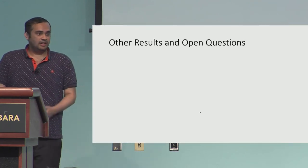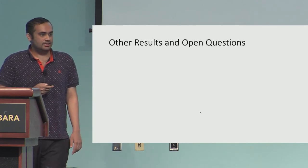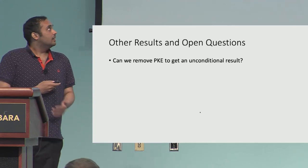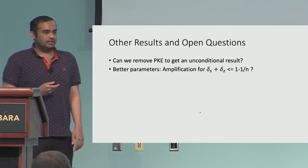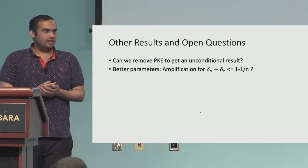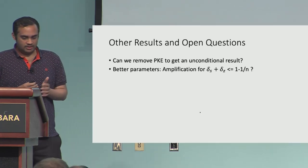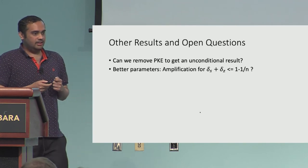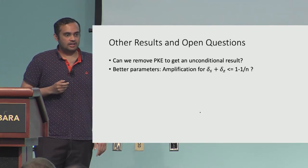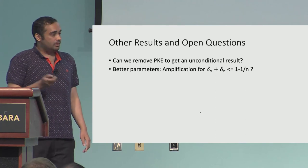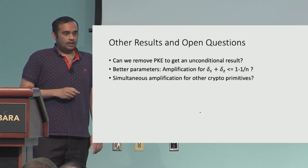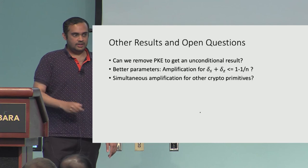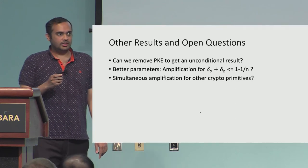Let me conclude with some open questions. First, can we get rid of public key encryption to get an unconditional result? Second, can we construct this amplification with better parameters? Our compiler is not very efficient, and we can only handle when δS plus δZ is 1 minus some constant — can we go all the way to 1 minus 1/security parameter? Finally, can we study simultaneous amplification for other cryptographic primitives? With this, I would like to conclude. Please ask me questions.